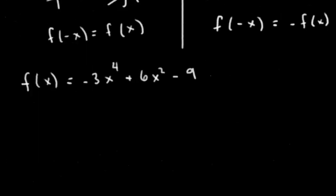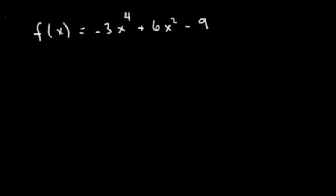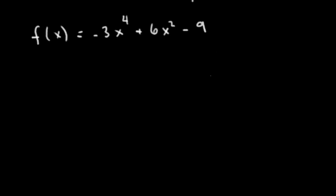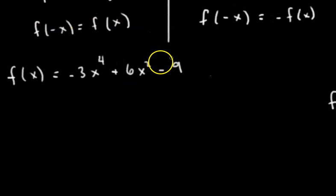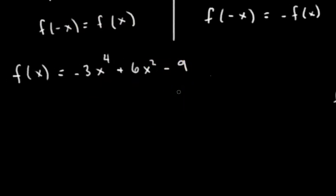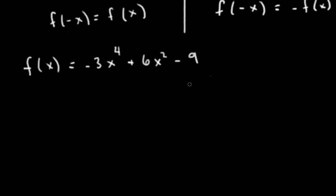So let's do an example. Here we have a function, negative 3x to the fourth plus 6x squared minus 9. We don't know right away what that looks like, so we can't test the symmetry. We're going to use these two definitions here. The process is always the same - you just plug in negative x everywhere you see an x and you see what you get. So given f of x, let's find what f of negative x is.